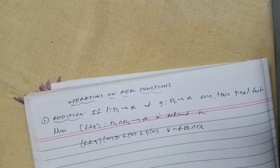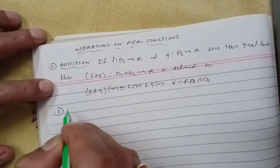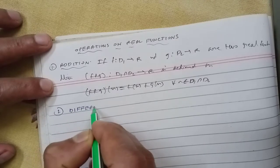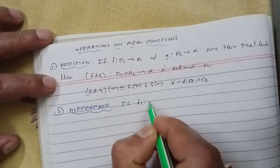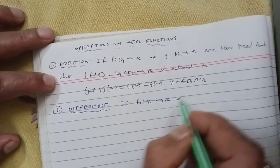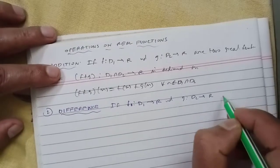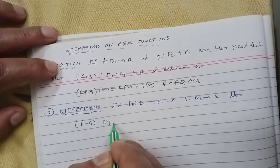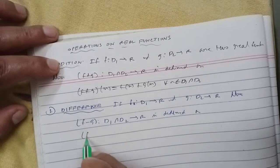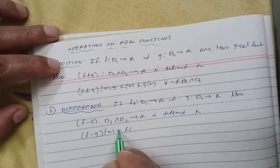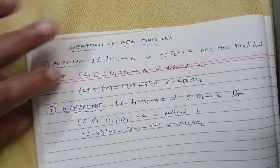Number two: difference. Similarly, if f is a mapping from d1 to r and g is a mapping from d2 to r, then f minus g is a mapping from d1 intersection d2 to r, defined as (f minus g)(x) equals f(x) minus g(x) for all x belonging to the common portion of the domain.